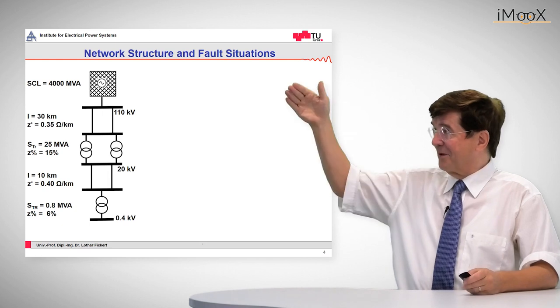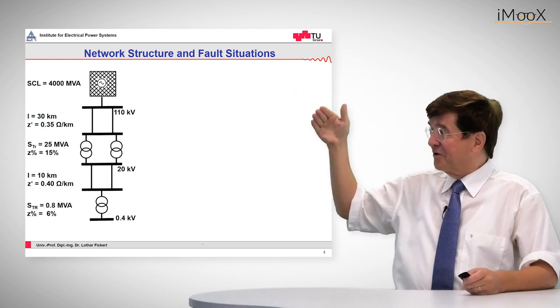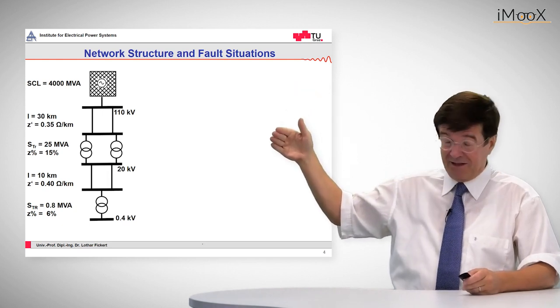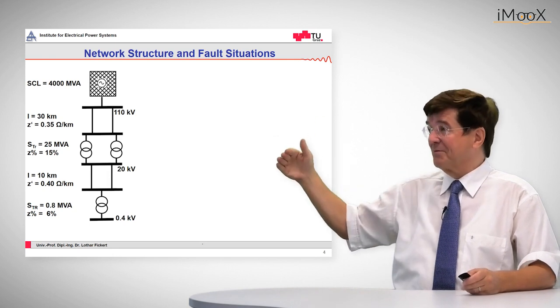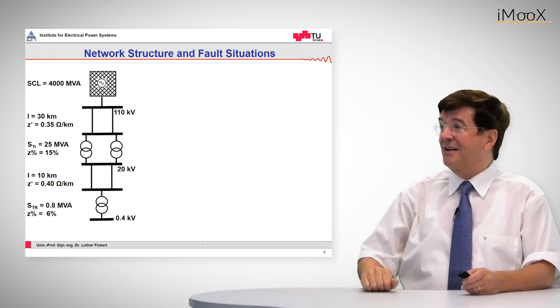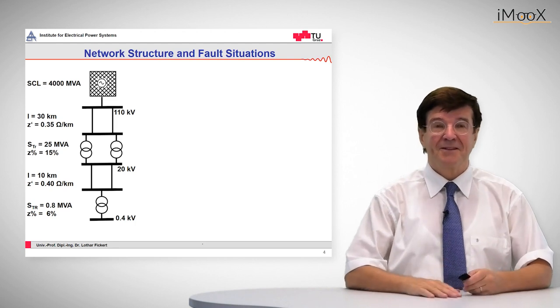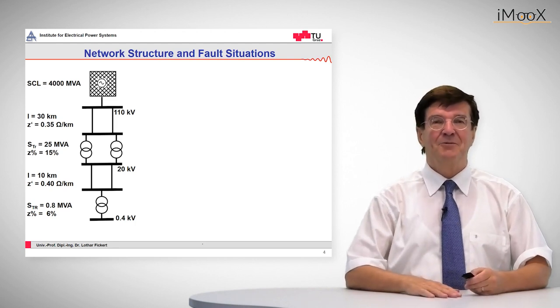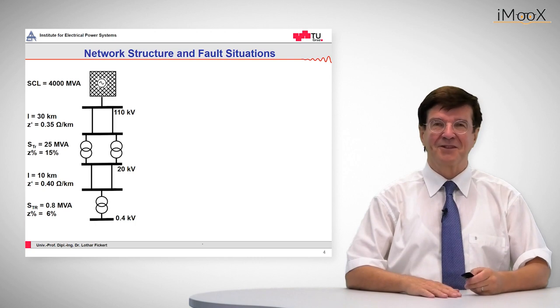The grid is made up of a superlaying grid, two 110 kV parallel lines, two transformers in parallel, again two 20 kV lines, and a medium voltage network which passes on the current through a ring main unit transformer to the low voltage side.